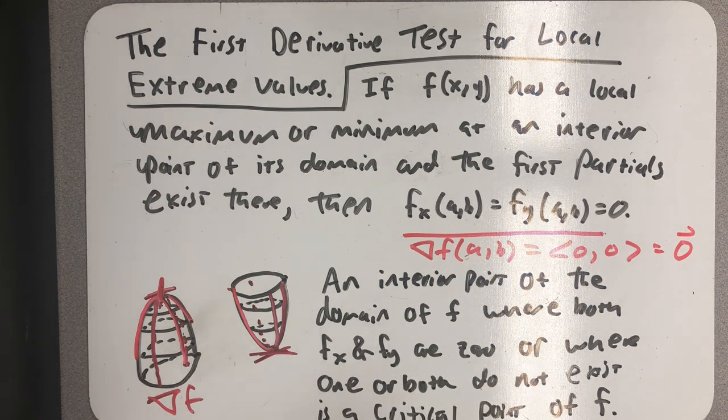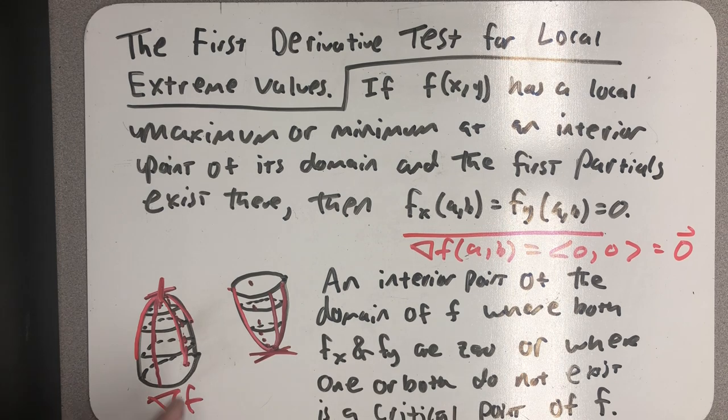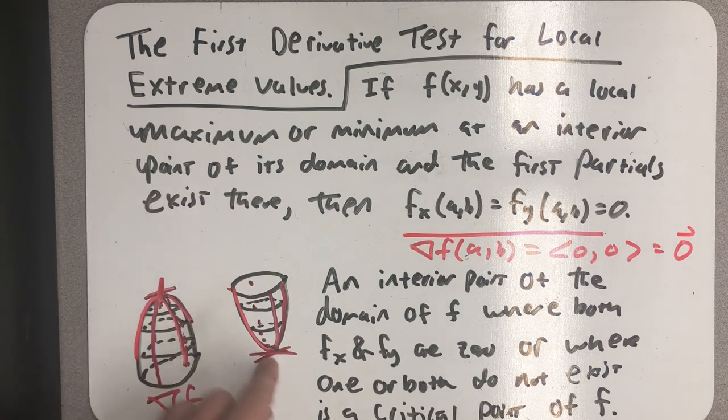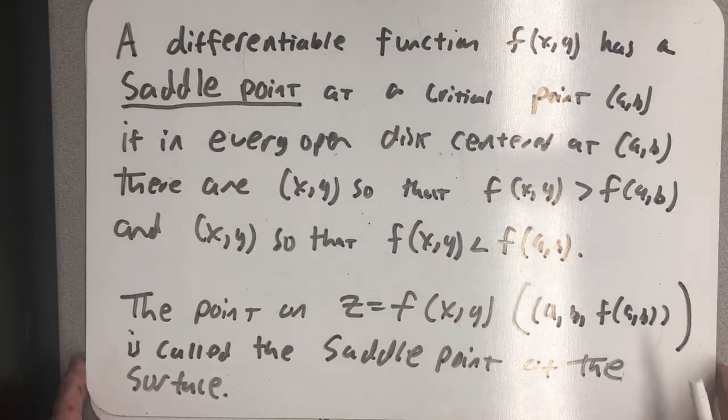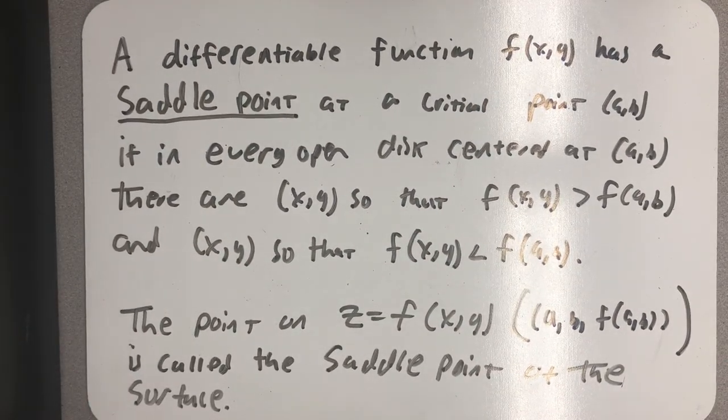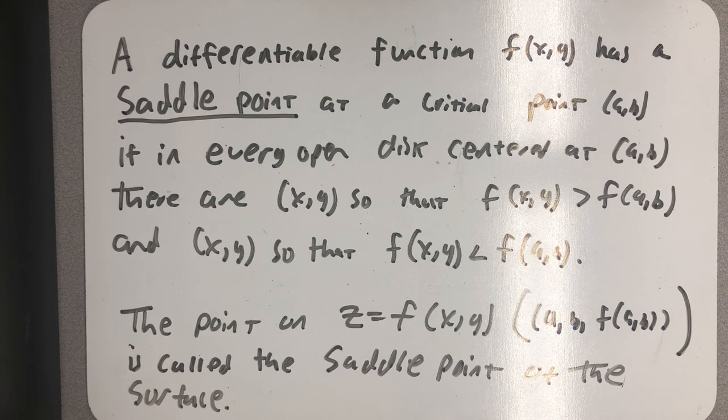One more definition. We have talked about local mins and local maxes. There is one more possibility. A differentiable function, f(x, y), has a saddle point at a critical point (a, b).